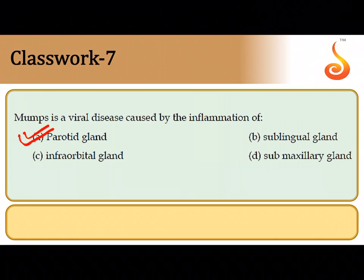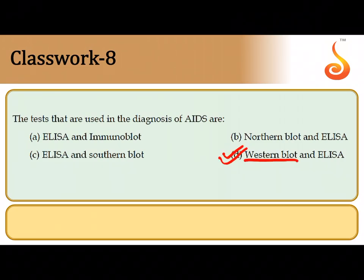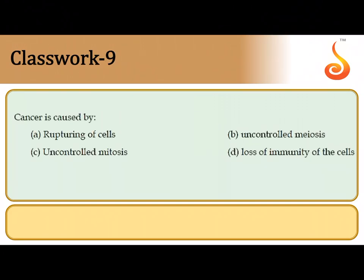The eighth question: the tests used in the diagnosis of HIV are Western blot and ELISA. ELISA is a diagnostic test and Western blot is a confirmatory test for AIDS. The ninth question: cancer is caused by uncontrolled mitosis — cells repeatedly dividing without any break can result in cancer. So option C is the correct answer.